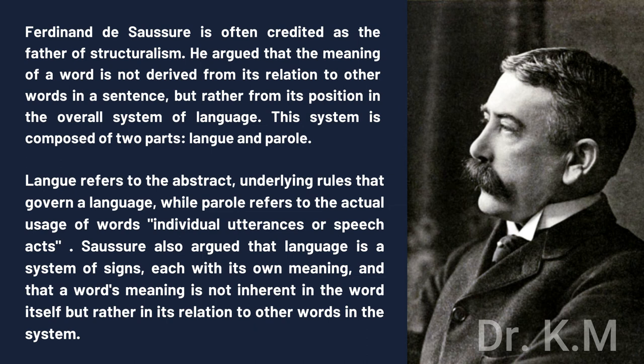Ferdinand de Saussure is often credited as the father of structuralism. He argued that the meaning of a word is not derived from its relation to other words in a sentence, but rather from its position in the overall system of language. This system is composed of two parts: langue and parole. Langue refers to the abstract underlying rules that govern a language, while parole refers to the actual usage of words, individual utterances or speech acts. Saussure also argued that language is a system of signs, each with its own meaning, and that a word's meaning is not inherent in the word itself but rather in its relation to other words in the system.